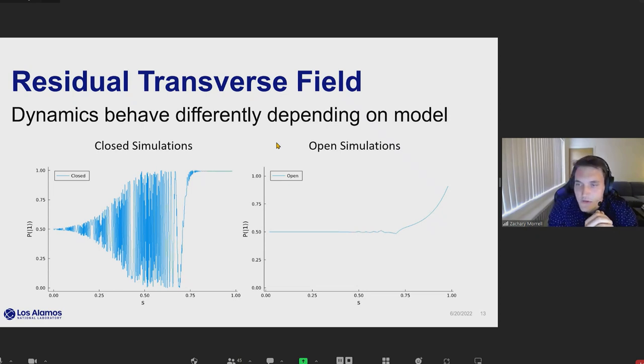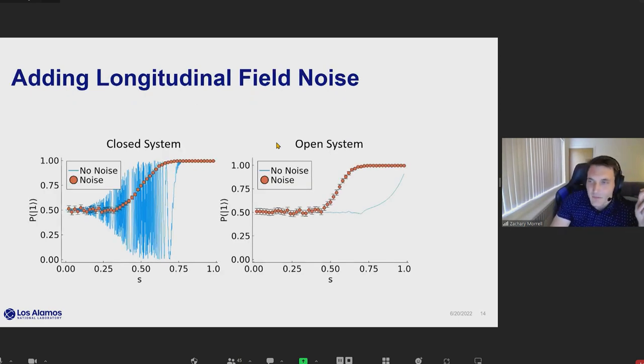What happens if we end up introducing this longitudinal field noise? This is actually really quite surprising. In both cases, it produces S-curves which look relatively similar to what we observe on the hardware.